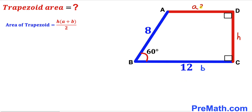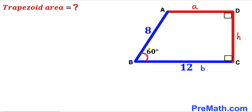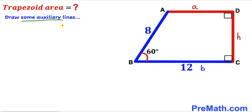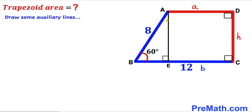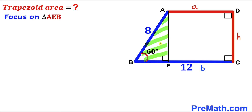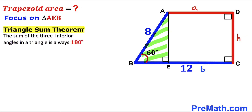Our base a value and height H are both unknown, so our task is to find them. We can see that angle ABC is 60 degrees, so we'll draw some auxiliary lines. We drop a perpendicular AE onto base BC, giving us right triangle AEB. Now let's focus on right triangle AEB and apply the triangle sum theorem.